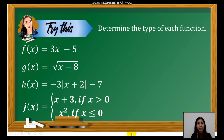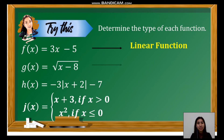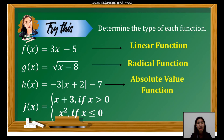Now it's time to apply what you've learned. Determine the type of each function — you may pause the video to answer. Let's check your work: the first function is a linear function, the second is a radical function, the third is absolute value, and the fourth is a piecewise defined function. Given the graph of the function: the first is absolute value, the second is a quadratic function, and the third is a radical function.